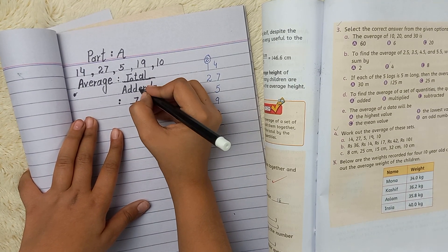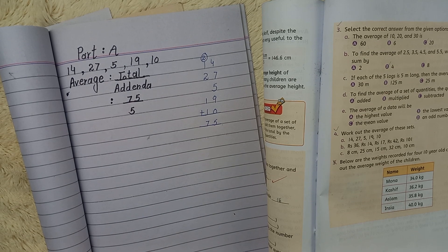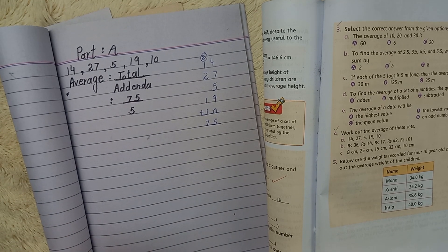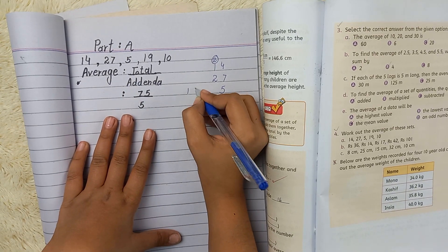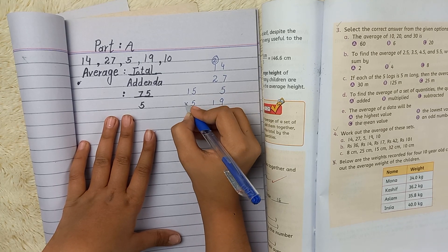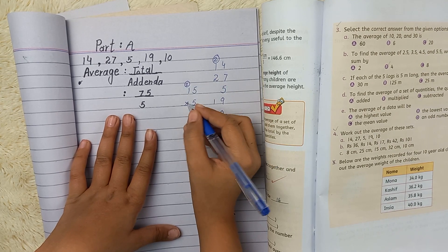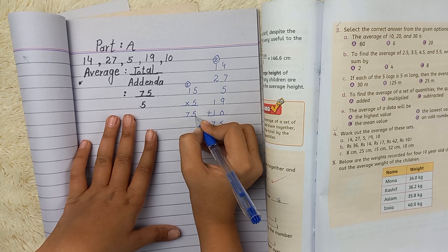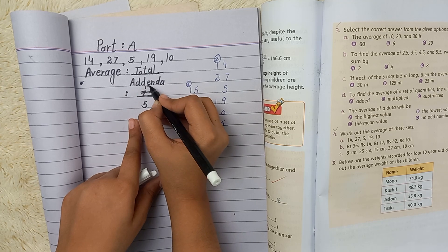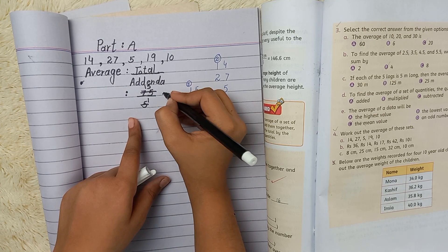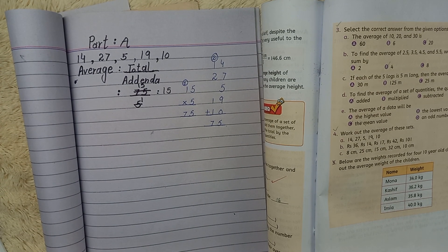So in total we have 75, and the addenda is 5 because there are 5 numbers. Let me show you — 75 divided by 5: five 5s are 25, five 1s are 5, add 2, that gives you 15. So the average is 15. That's how you do Part A.